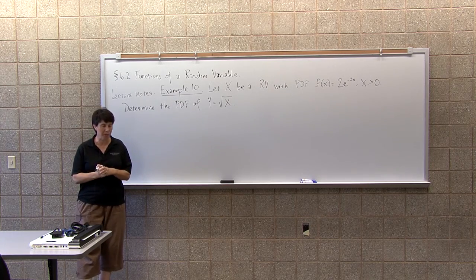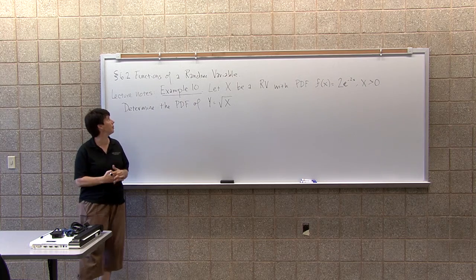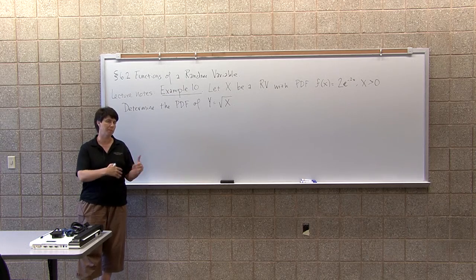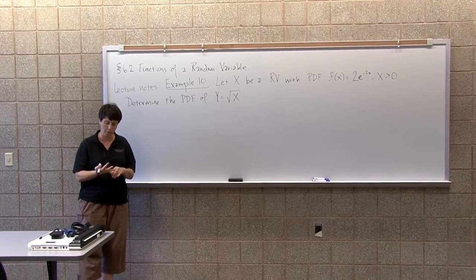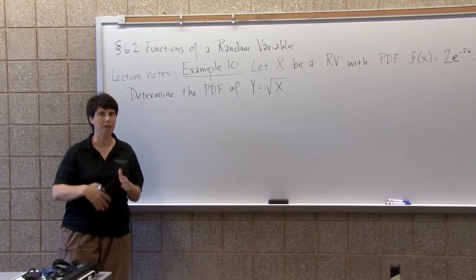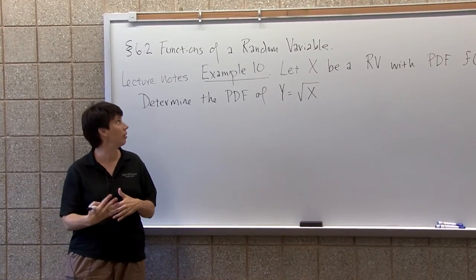Section 6.2 is functions of a random variable. We've now covered chapter 7, which looked at some special random variables like the uniform, the exponential, the normal. And now that we know a little bit about continuous random variables in the language,